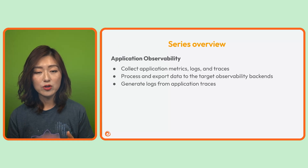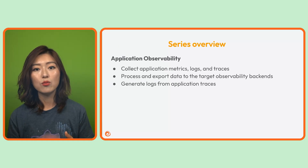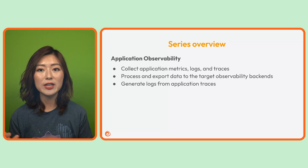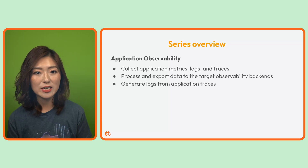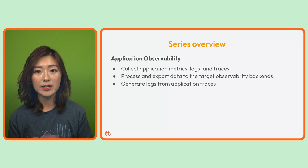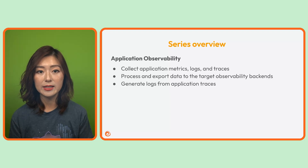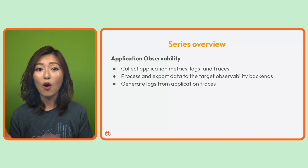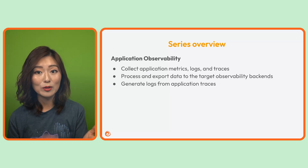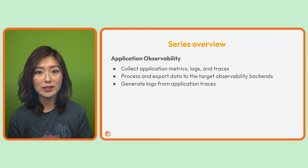For application observability, we'll use Alloy to collect metrics, logs, and traces from our app. Then we'll process and export the data to the target observability backends. We'll also learn how to generate logs from the traces we've collected.